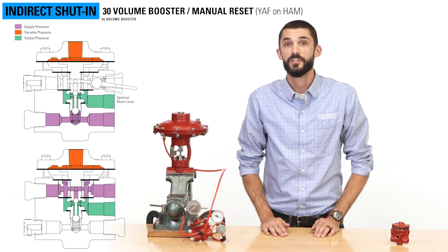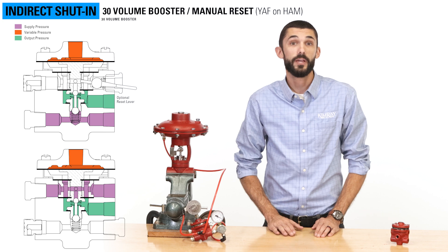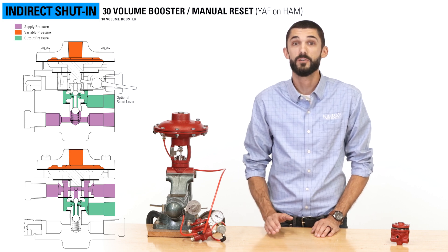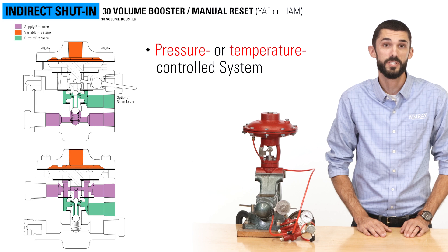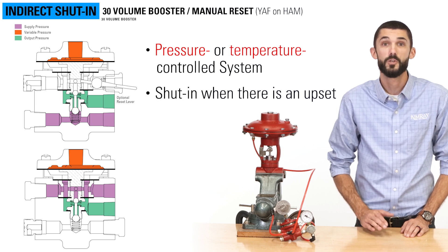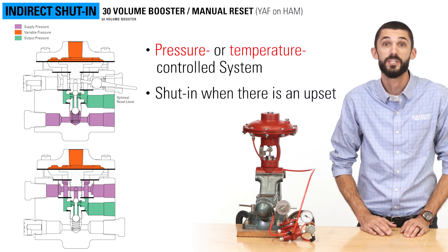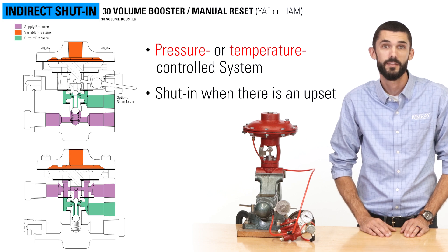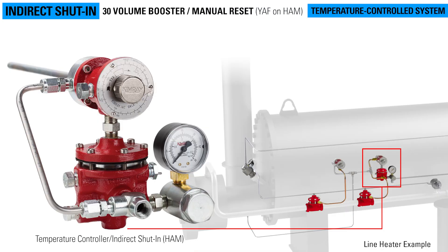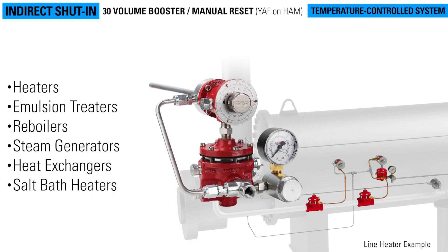A second application for a pneumatic relay is for indirect shut-in. Indirect shut-in refers to either a pressure or temperature controlled system that is shut in when there is an upset, so that the process does not continue until manually reset. In a temperature controlled system, the indirect shut-in uses a relay to shut down a process to prevent damage to the equipment in the event that the temperature goes over its set point. These can be used in heaters, emulsion treaters, reboilers, steam generators, heat exchangers, and salt bath heaters.